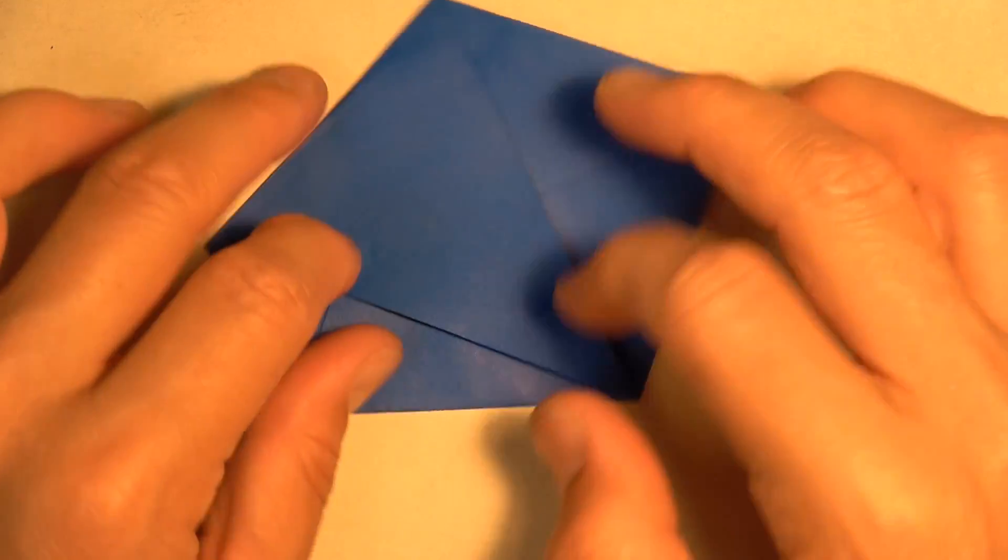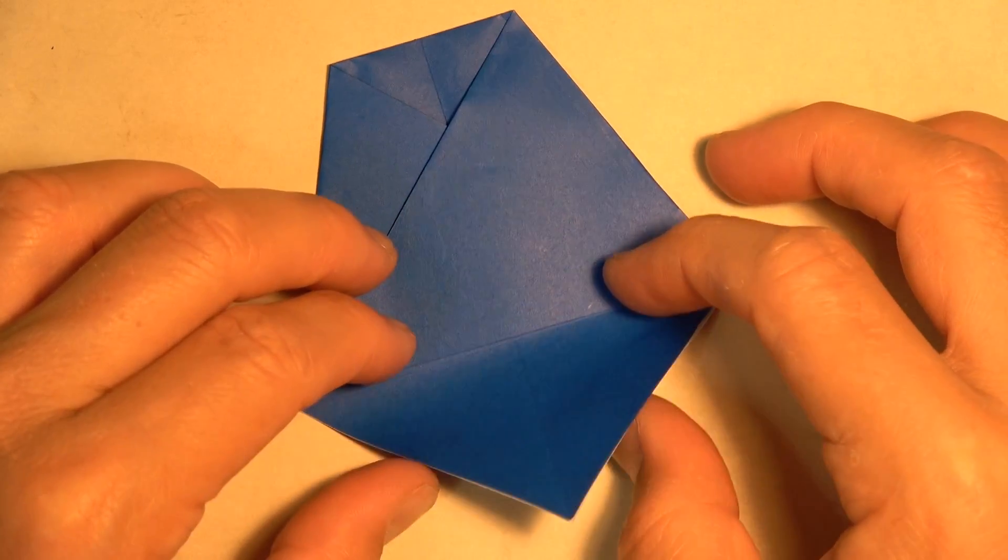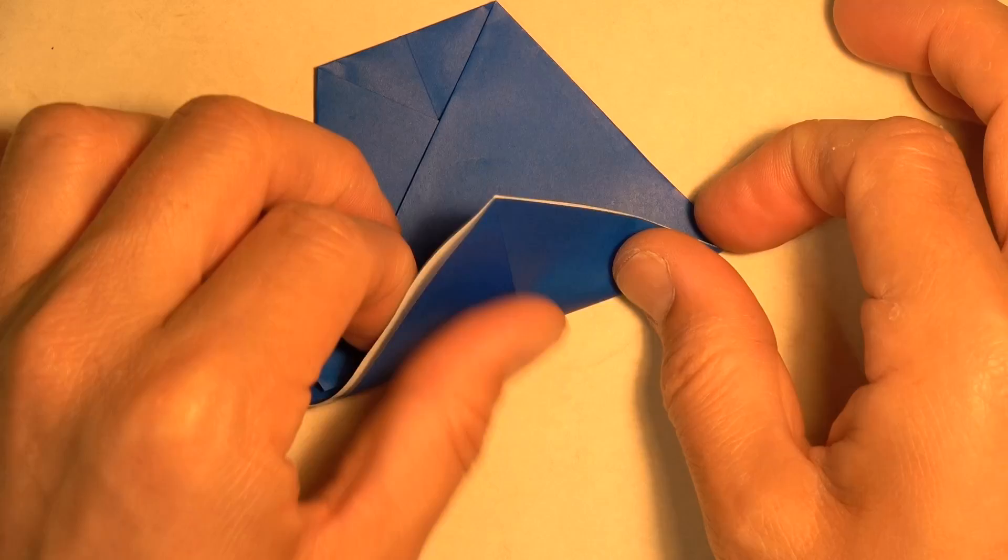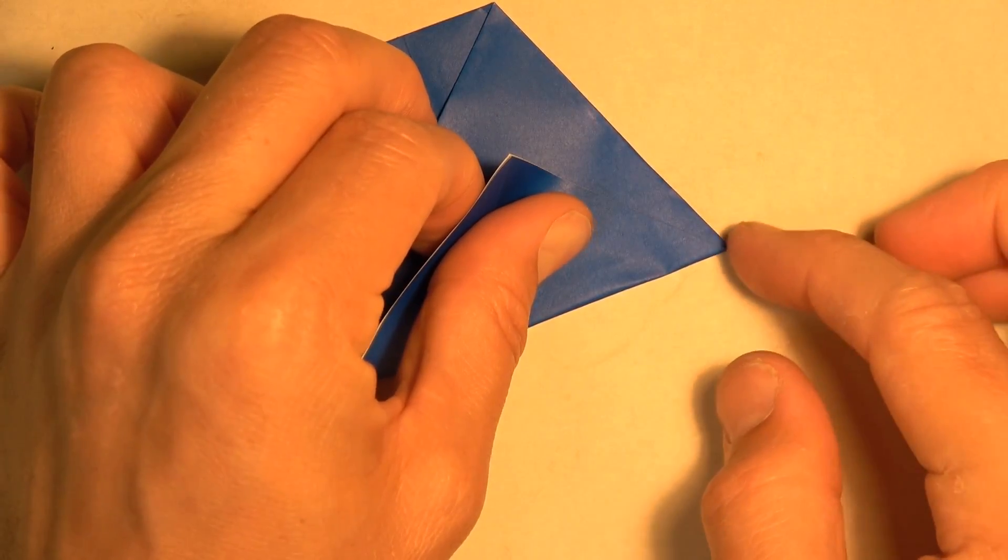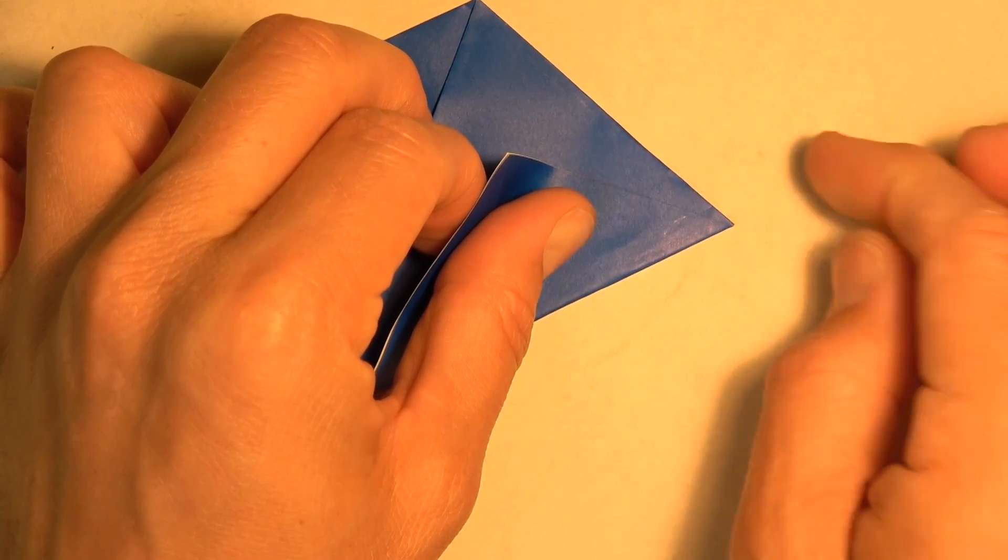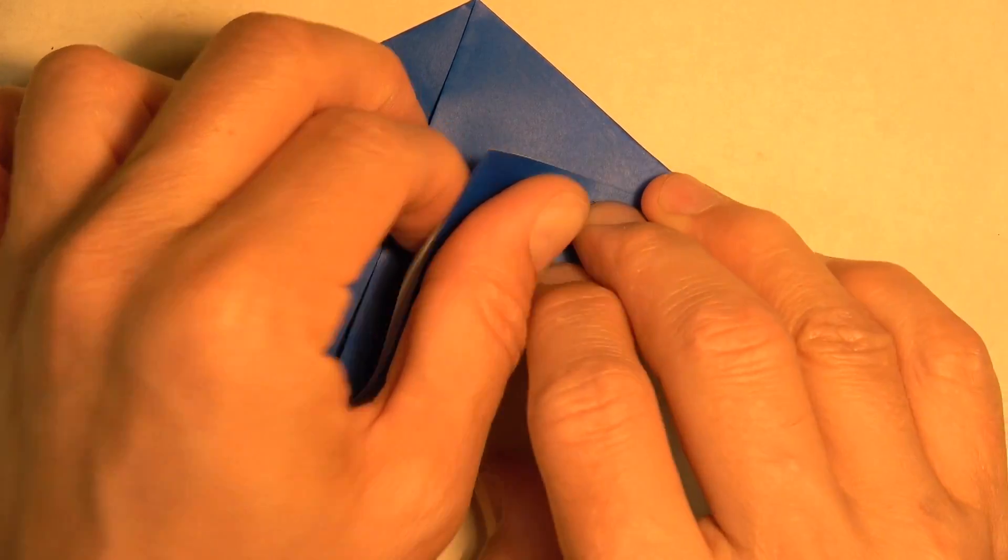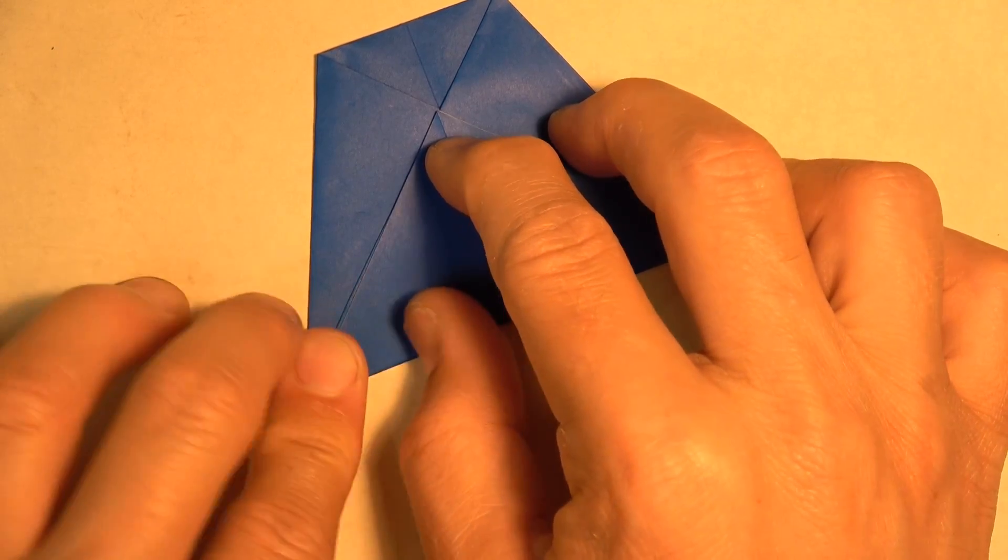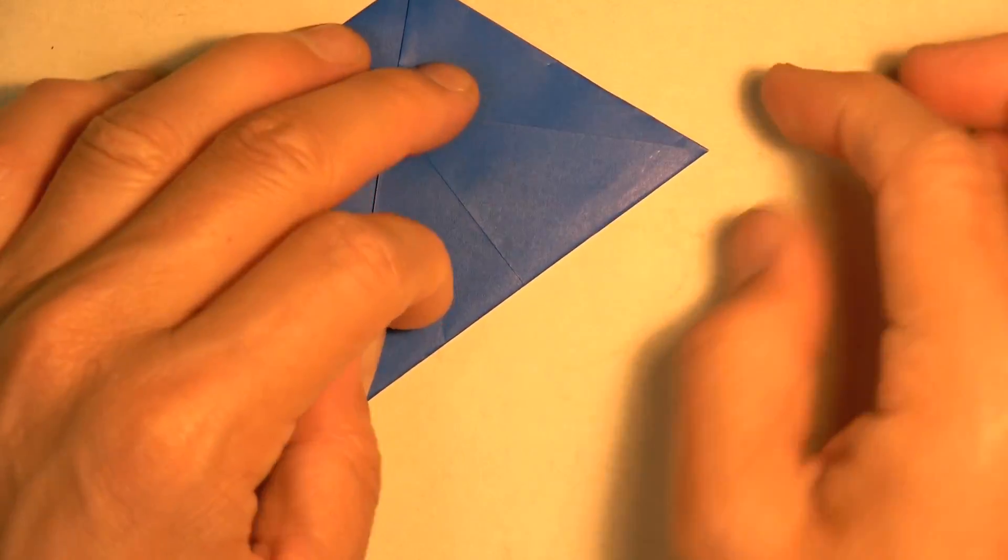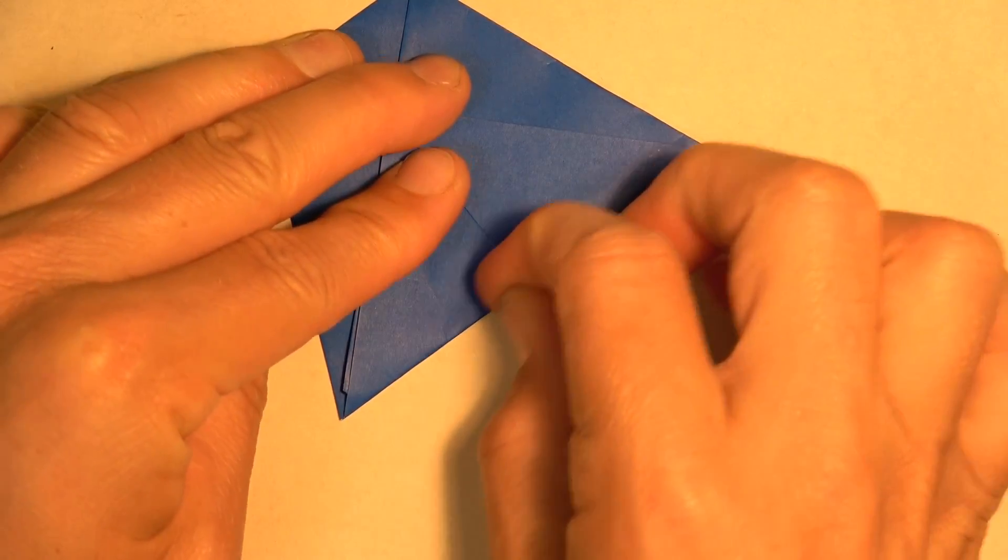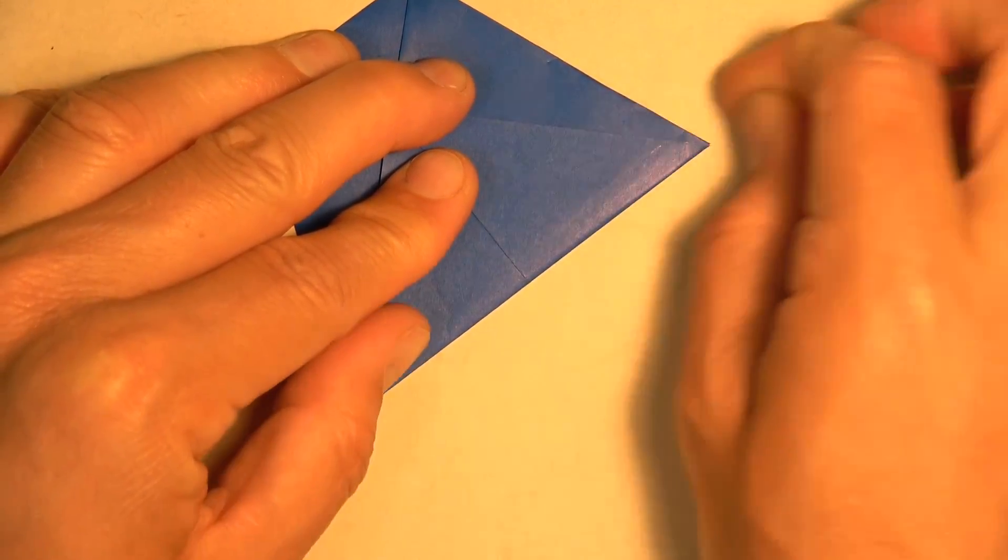And rotate. And let's fold these flaps over this edge. Now when you do this, make sure that this is very sharp. So make this come to a perfect point. And same on this side. These two points are what the model is going to spin on, so we want those to be as sharp as possible.